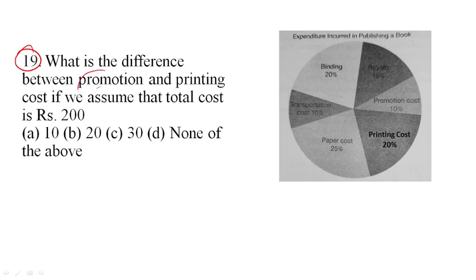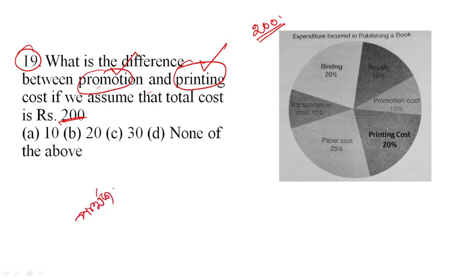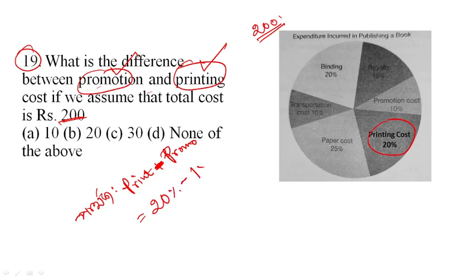What is the difference between promotion and printing cost? If we assume that total cost is 200, the difference between promotion and printing cost: printing cost is 20 percent, minus promotion cost is 10 percent.